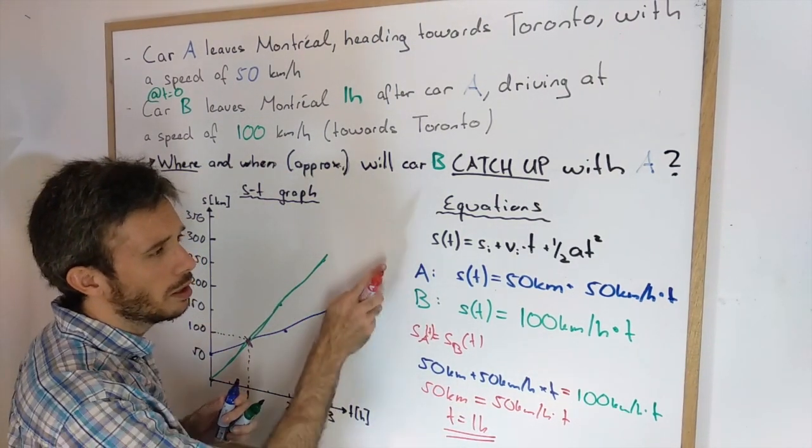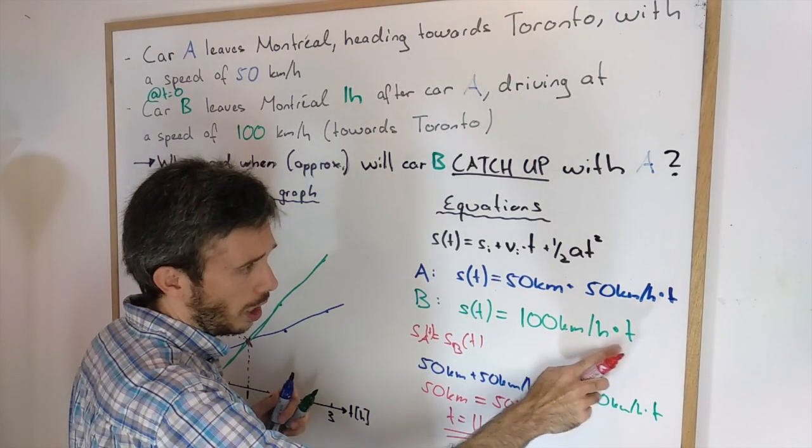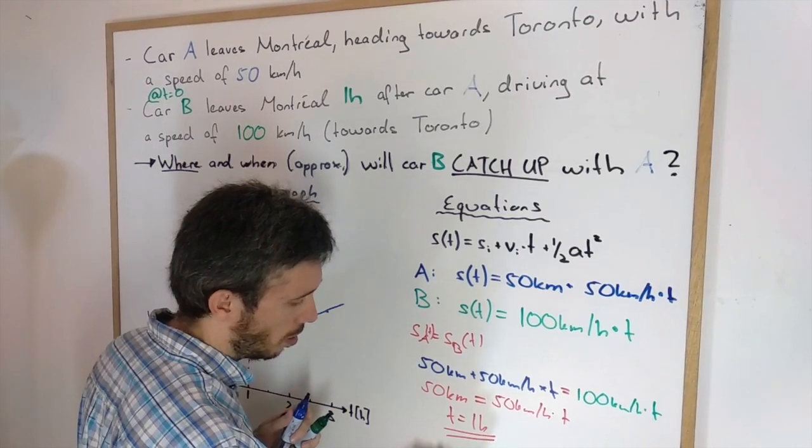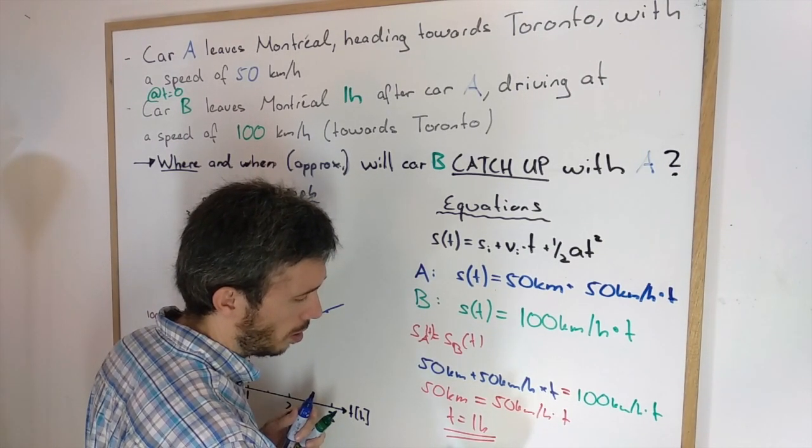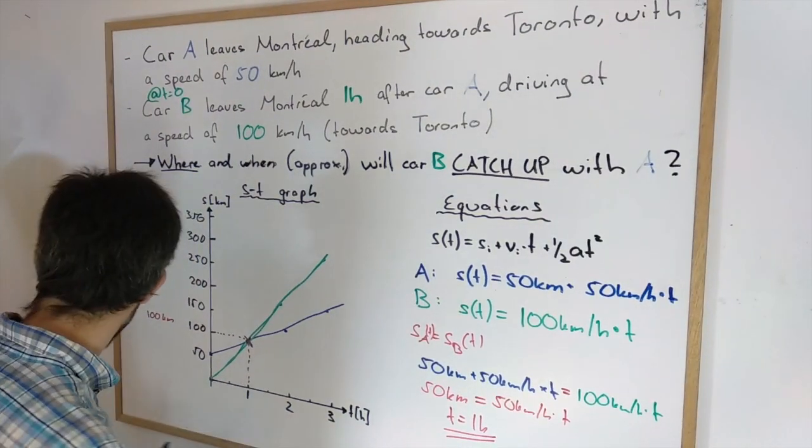And then I plug it in either in A or B. In this case I would definitely use B. And 1 hour times 100 km gives me position is 100 km. And I get exactly the same answer.